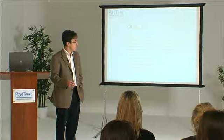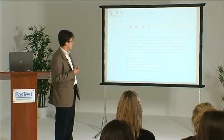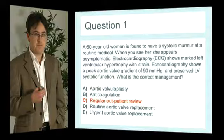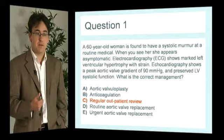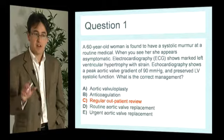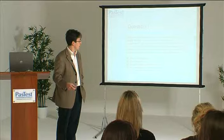In this instance, one of the most important things we know about this lady is that she's asymptomatic. Things which would really worry me in someone with aortic stenosis would be syncope, symptoms of chest pain, or new onset breathlessness. If she has any of those, that puts her in a very high risk group where I'm thinking carefully about intervening very rapidly.